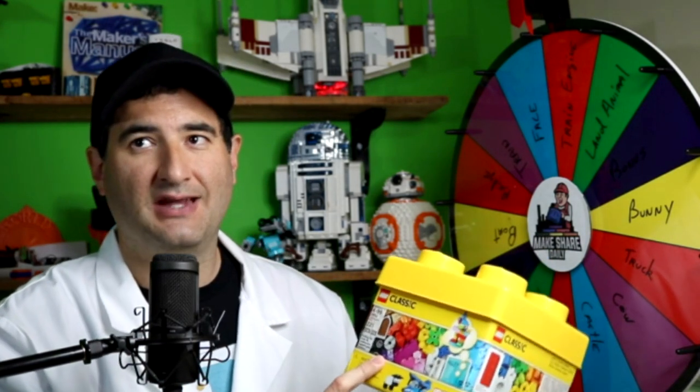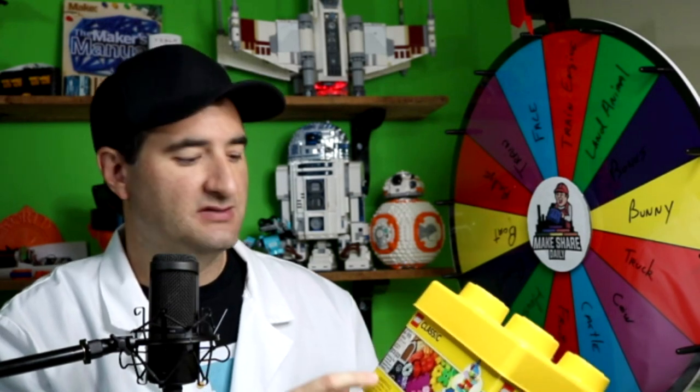Thanks so much for watching. Here at Make Shared Daily, we love to make things, especially with Legos. So these five-minute challenges are a lot of fun. And if you want to play along, go ahead and pick up this classic Lego box with 221 pieces. You can pick them up for about $15 at your local Walmart or Target. And then you can play along. Or just use any other Legos that you have at your house. As long as you build that same topic.